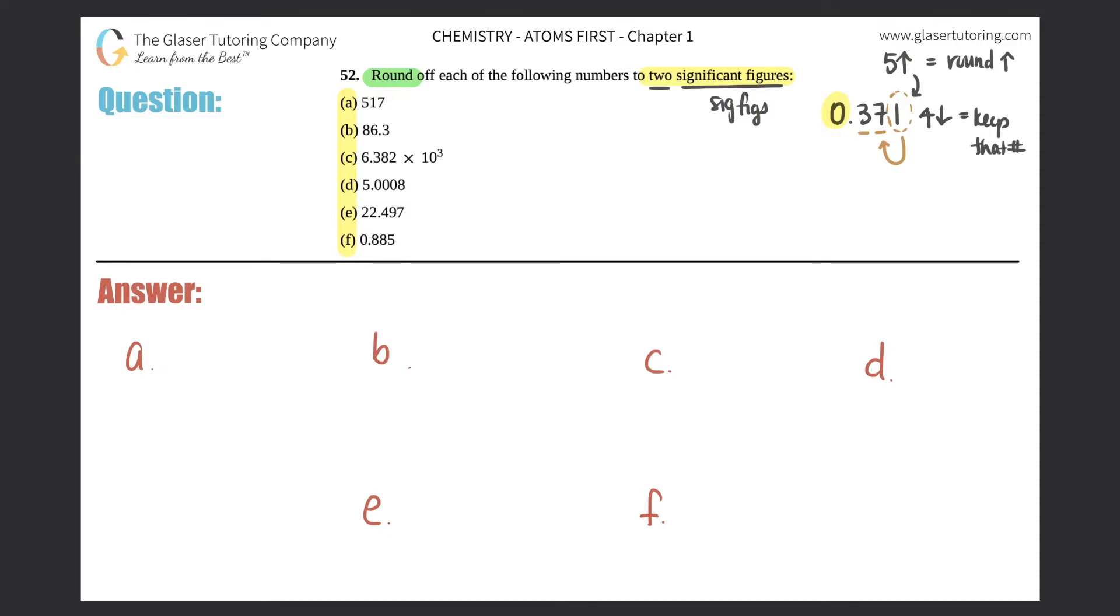So since this number is a 1, you cannot change this 7 to an 8, so this would just be 0.37. You basically drop that number. That number is only used to see if you could raise up or keep the same. So that would be two sig figs. That's like a little example. All right, so let's start.